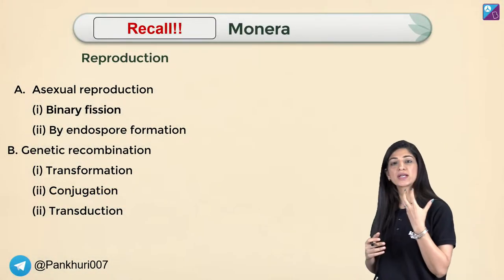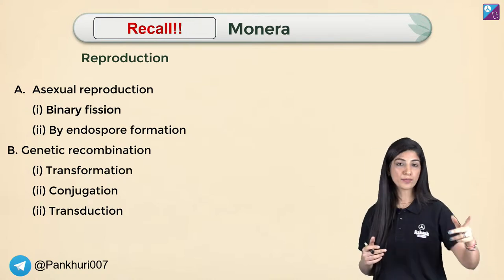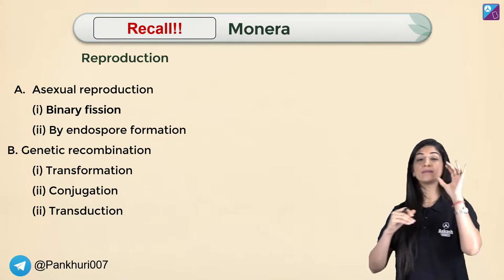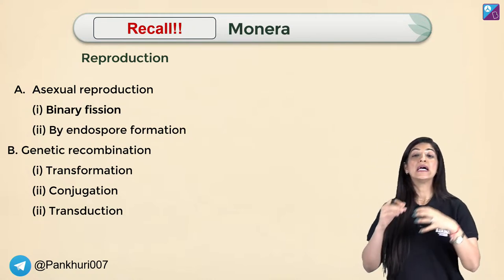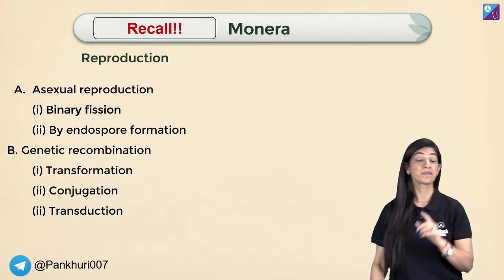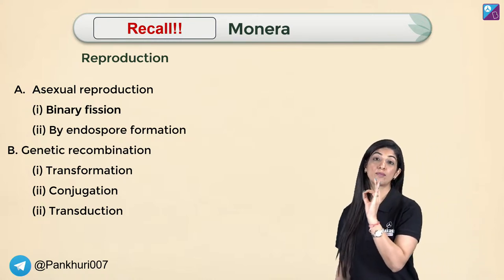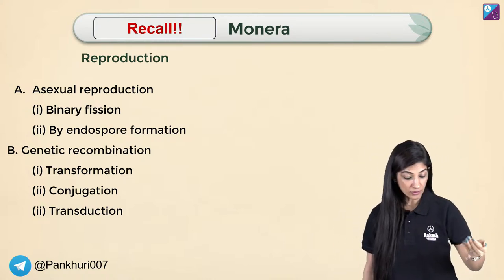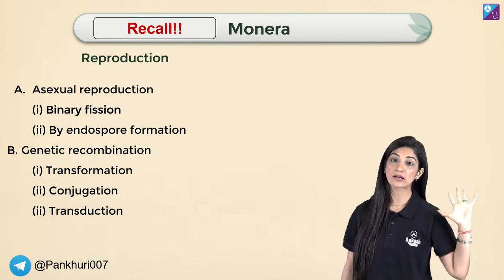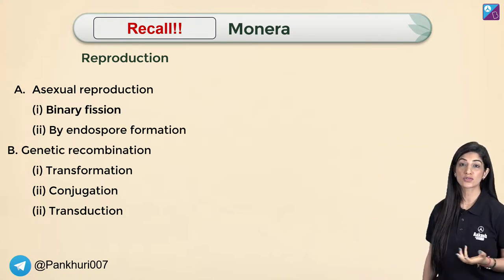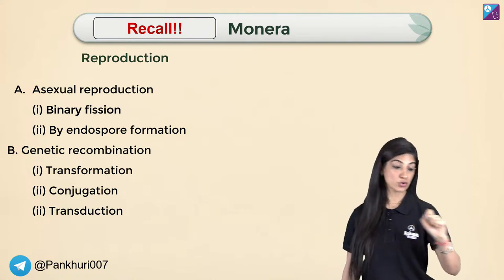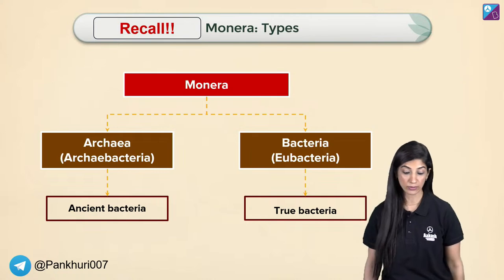Genetic recombination in bacteria occurs through transformation, conjugation, and transduction. Conjugation was explained in detail with diagrams — between F-positive and F-negative cells, involving plasmids, which are a very peculiar feature of Monerans. Transformation and transduction were covered broadly, including Griffith's experiment and Salmonella experiments. These topics will be studied in greater detail in Class 12 genetics and biotechnology.